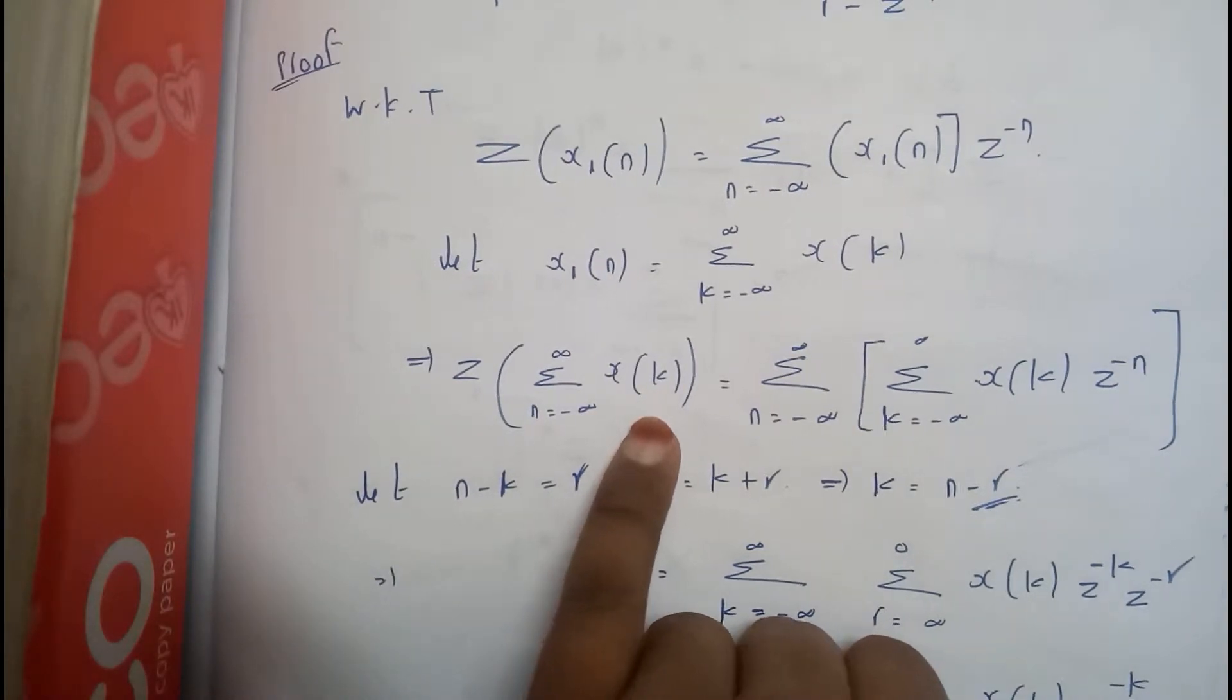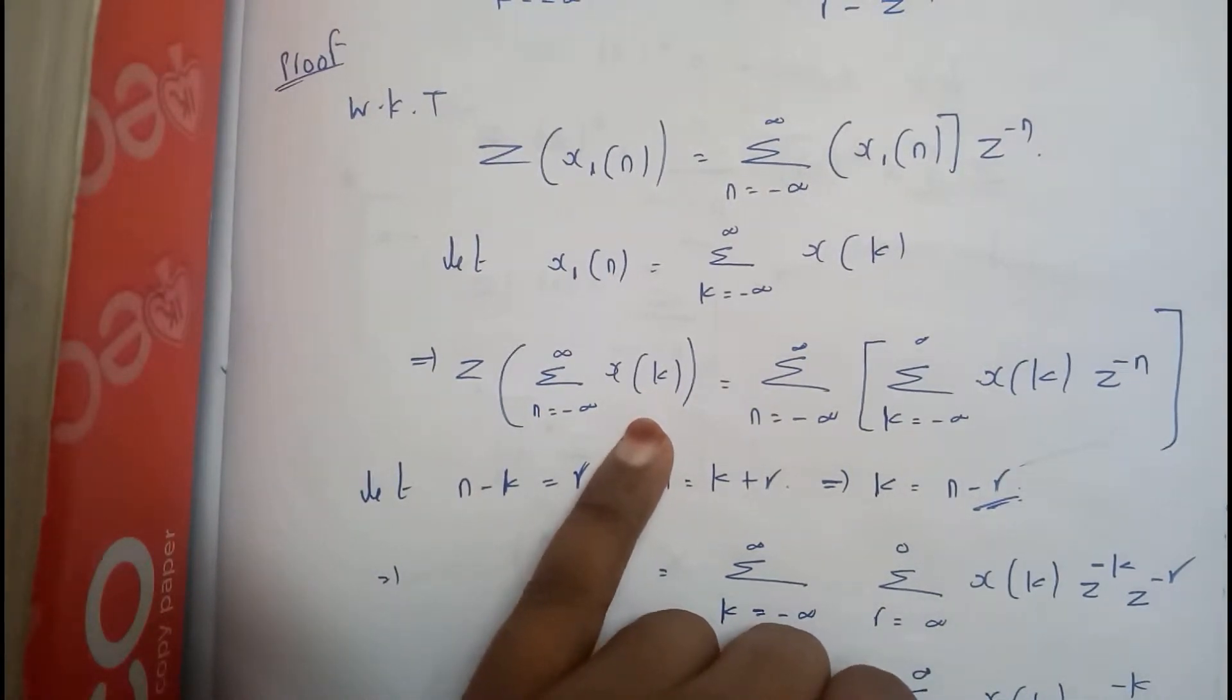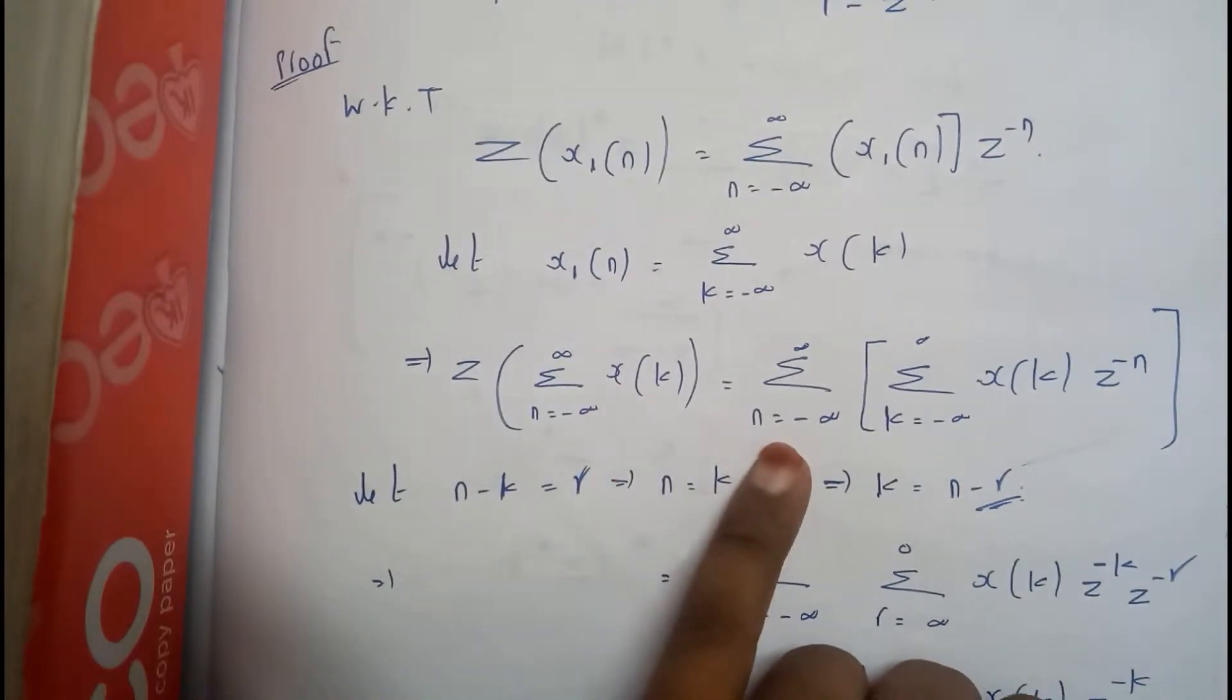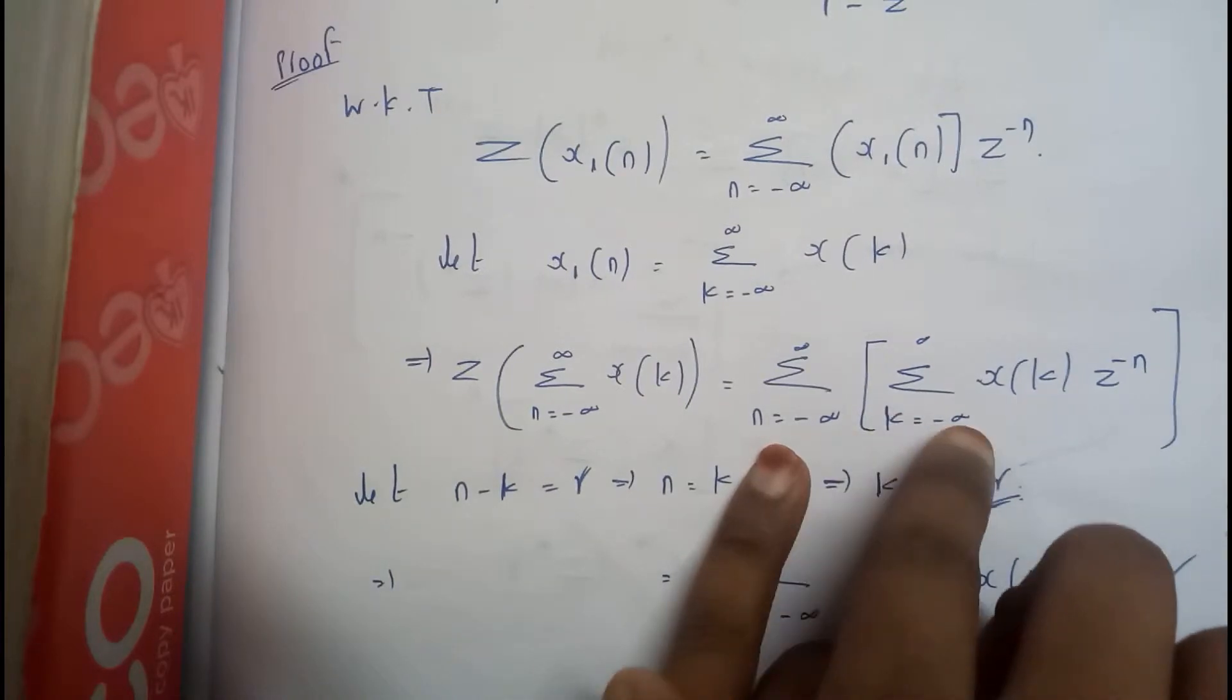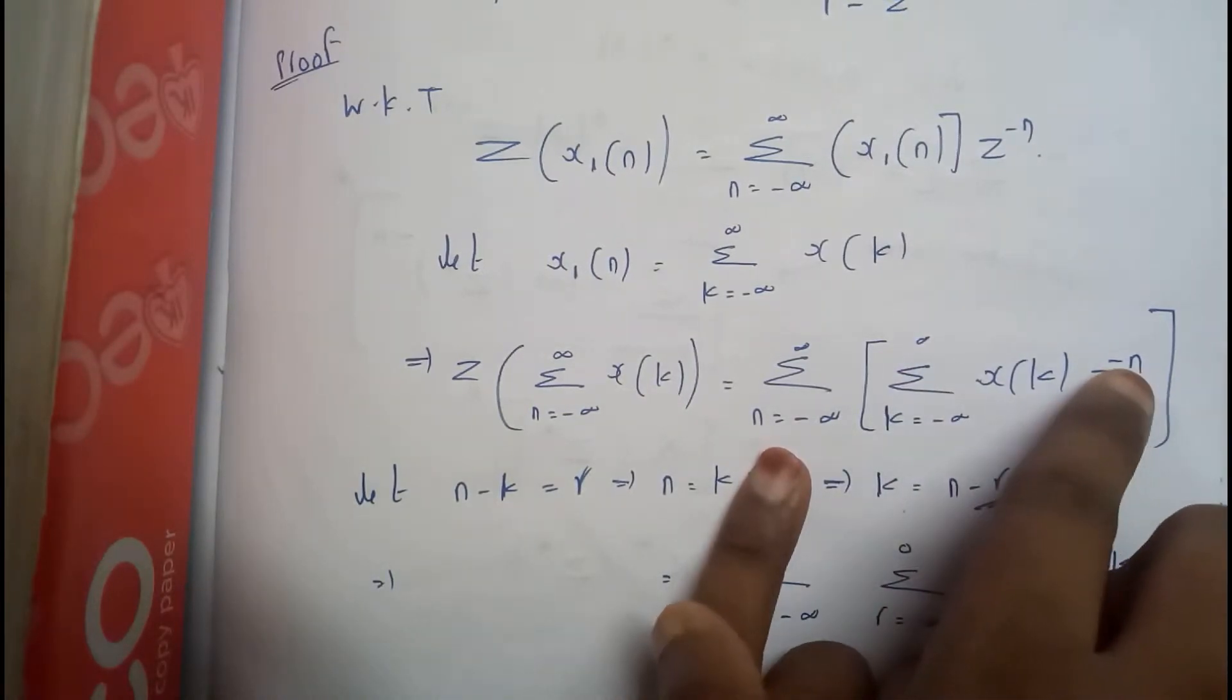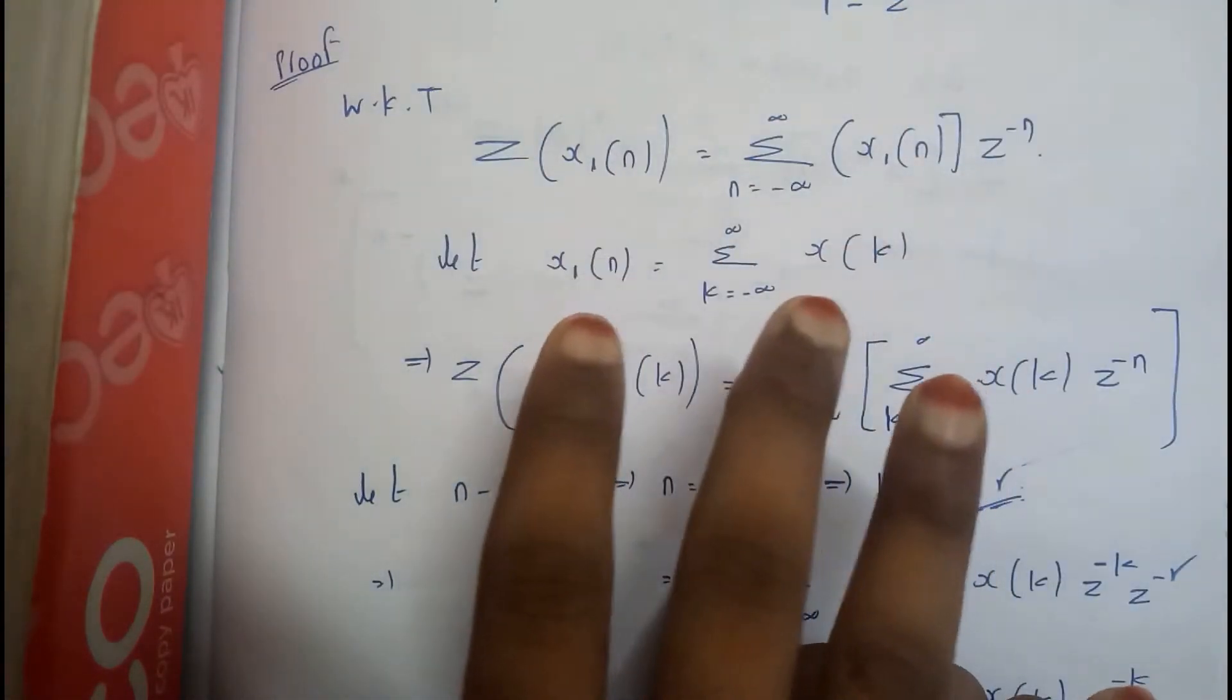Just give me a second guys. Okay, so sigma n equals minus infinity to infinity, sigma k equals minus infinity to n of x(k), z to the power of minus n. Just substitute all the values that we have.